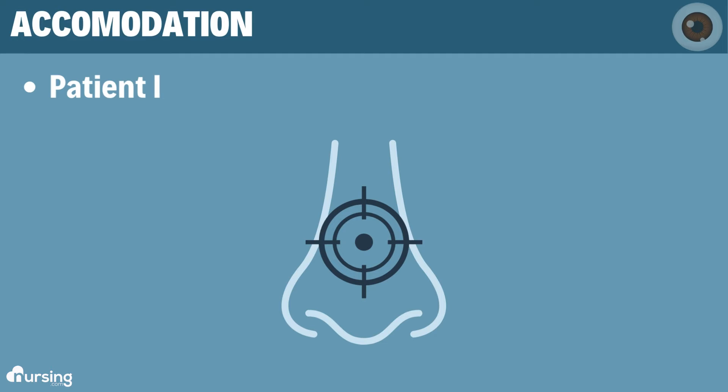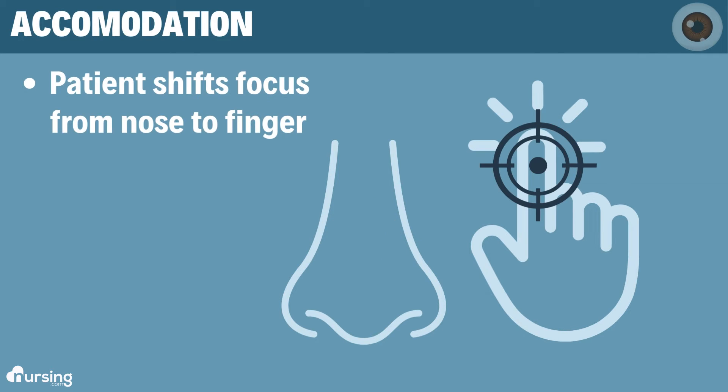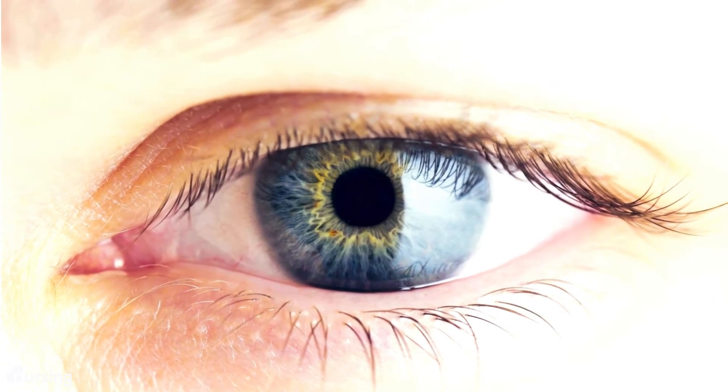The last thing we check is accommodation. And I'll be honest, most people don't check this, but they still chart PERLA. What we do is have the patient look at our nose, then put our finger up and have them shift their focus from our nose to our finger. When they're looking at something closer to them, their pupils should constrict in order to focus on that closer object.